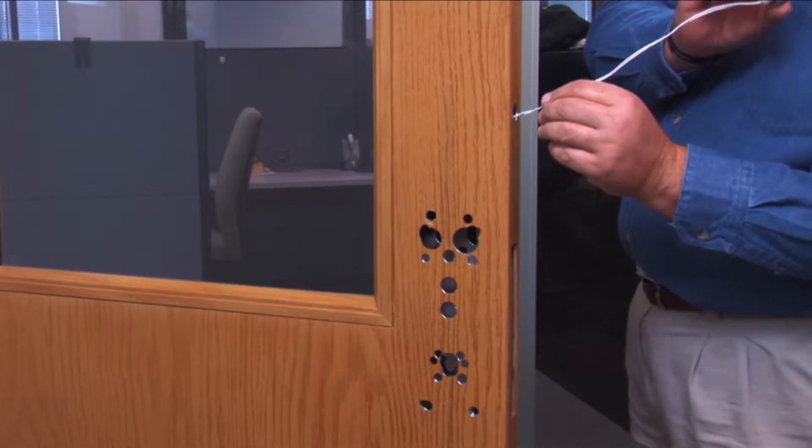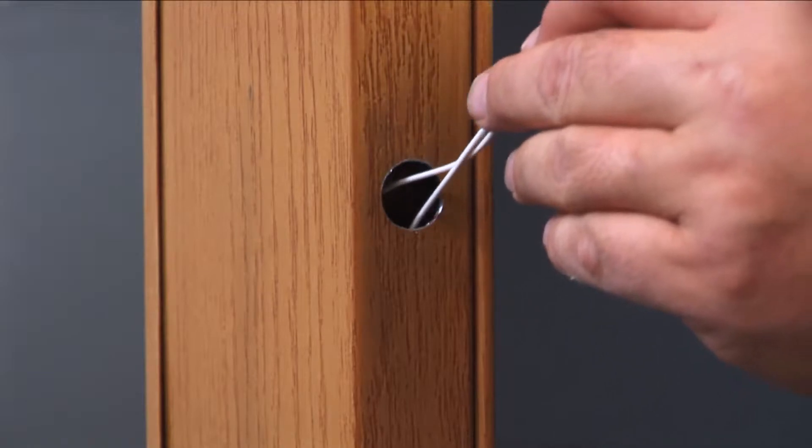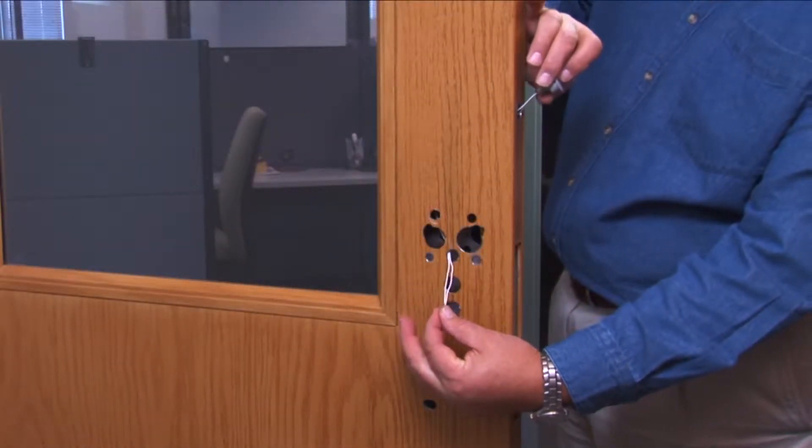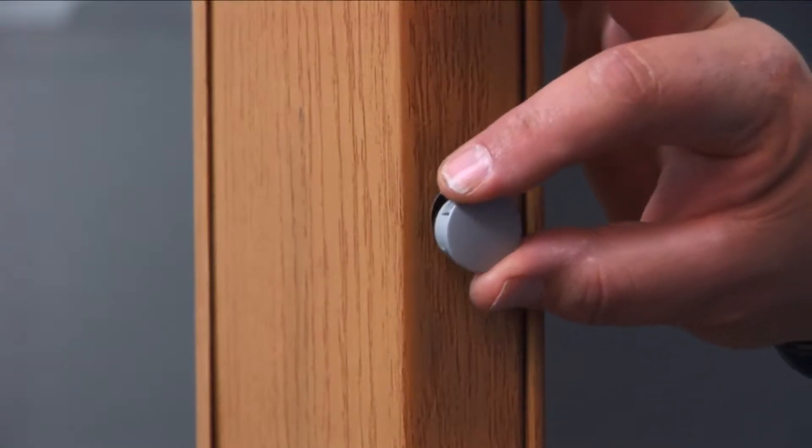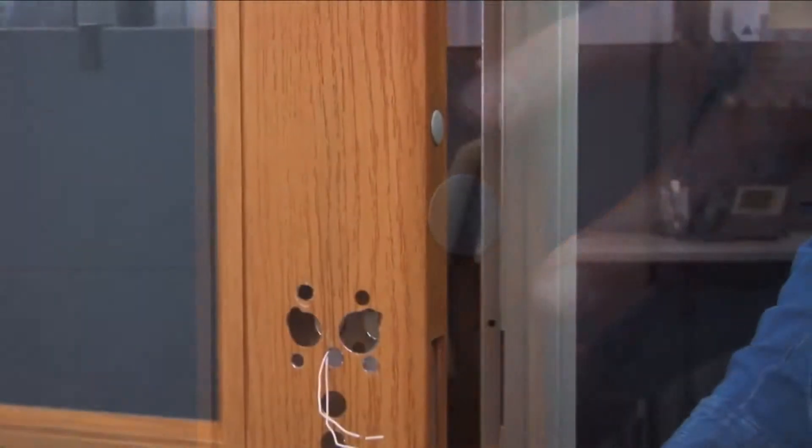Feed the door position switch wires through the door position switch hole in the door edge. Run the wire through the upper hole on the inside of the door. Push the door position switch sensor into the opening. Then install the companion door position magnet into the hole in the frame. Close the door to check for alignment.